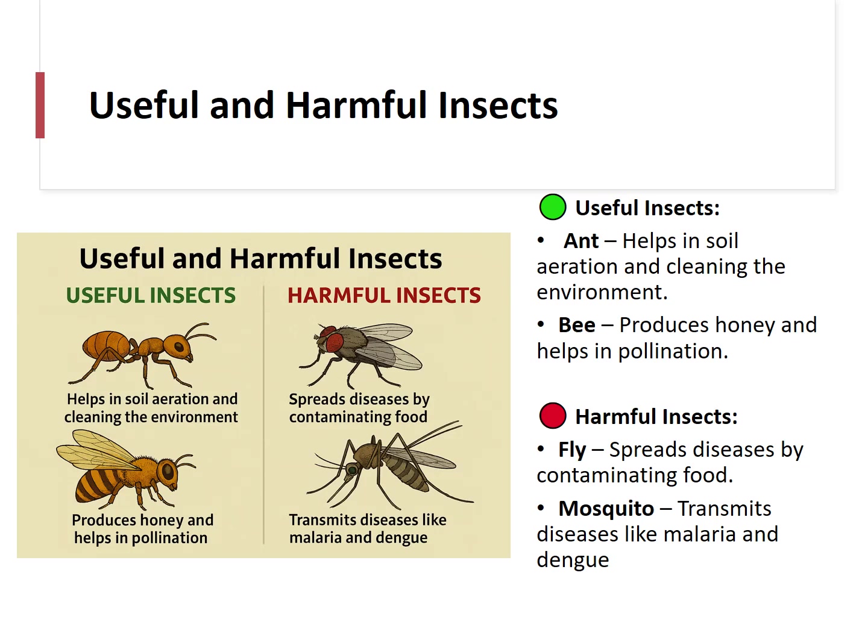Harmful insects include flies, which spread diseases by contaminating food, and mosquitoes, which transmit diseases like malaria and dengue.